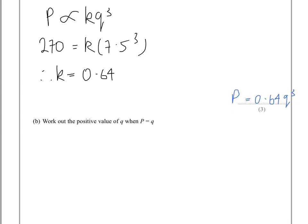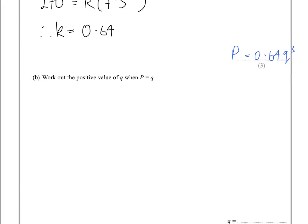In part B we're asked to work out the positive value of Q when P equals Q. So using that same equation P = 0.64Q³, we're told that P equals Q, so therefore Q = 0.64Q³.